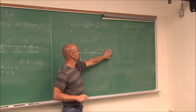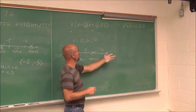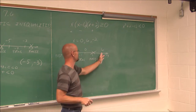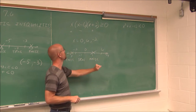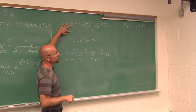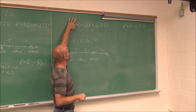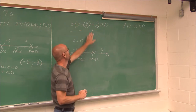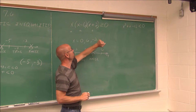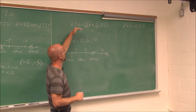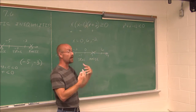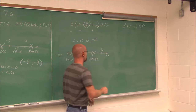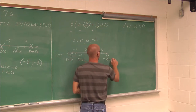Let's choose a value out here — 7 is greater than 6 and it's in that interval. If I plug 7 in, it's positive. 7 minus 6 is positive. 7 plus 2 is a positive value. A positive times a positive times a positive is, of course, positive. Positive values are greater than 0, so this interval is true.